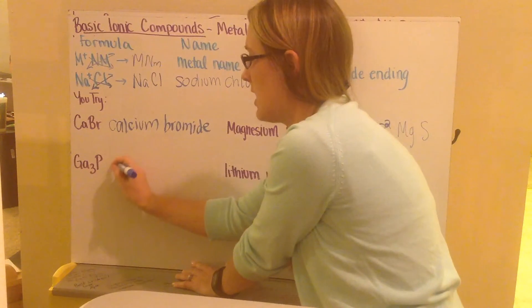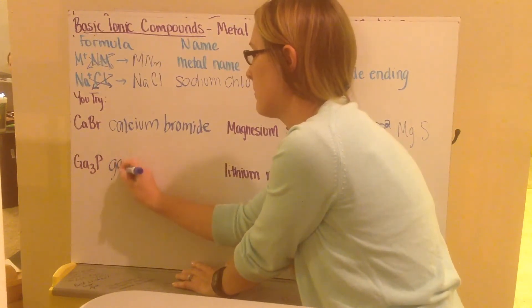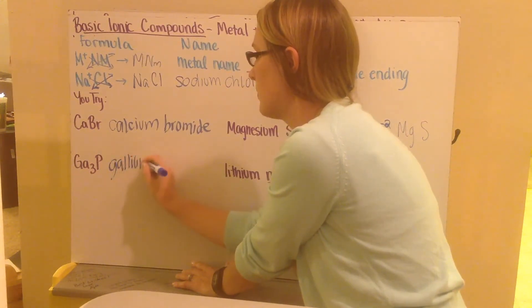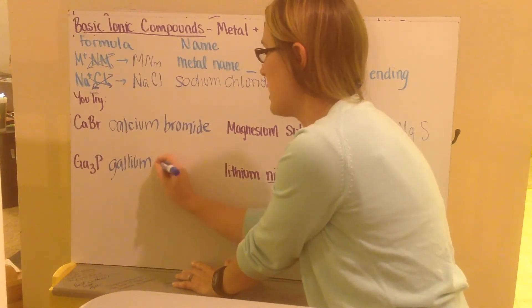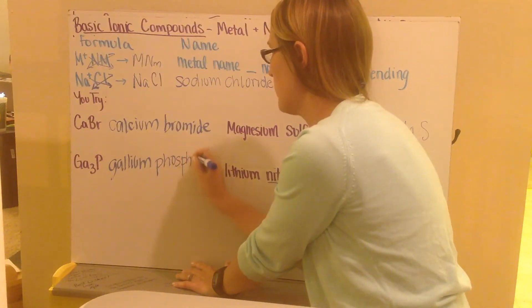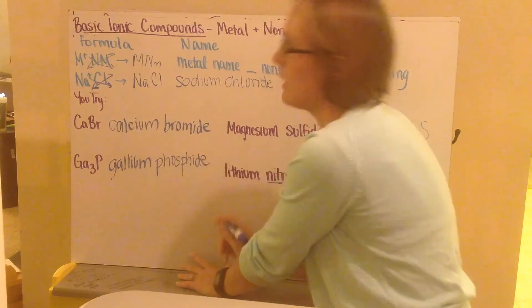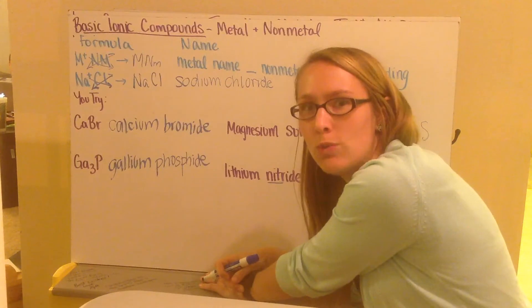Next I have Ga. That's gallium. And then the P is phosphorus. But it's my ion. So I have phos-phide. Spelling will count when you write your names.